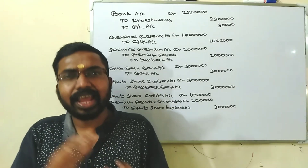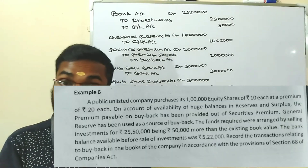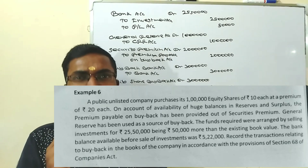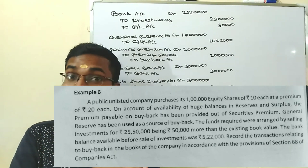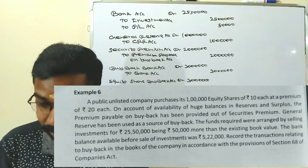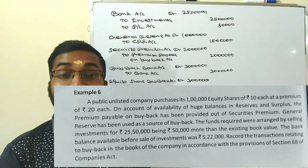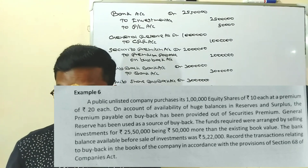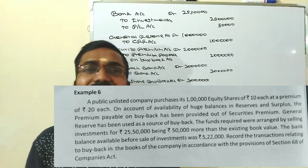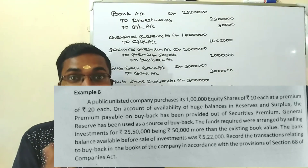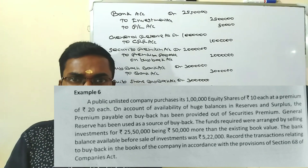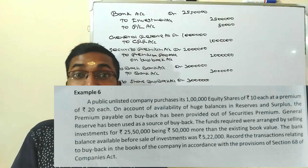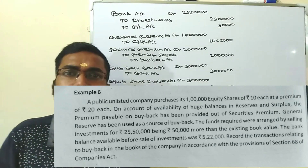It depends on the amount of the security premium account — equity premium account. Then general reserve has been used as a source of buyback. Face value is 10 lakhs (1 lakh × 10). The funds required were arranged by selling investment for Rs.25,50,000 more than the existing value, resulting in a profit to the sale.